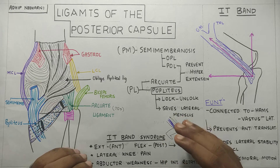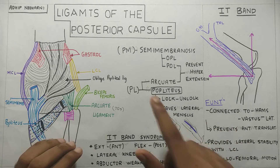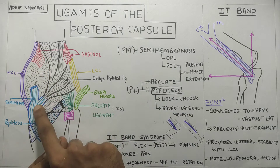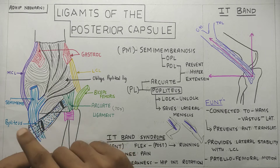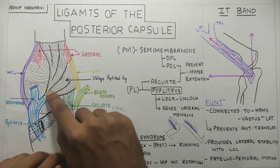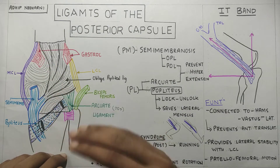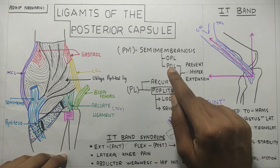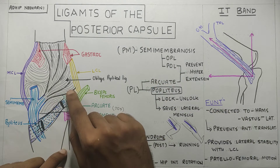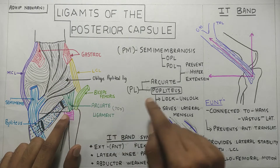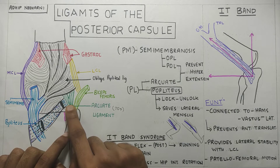In this video we are going to talk about ligaments of the posterior capsule. On the posteromedial side there is the MCL and semimembranosus tendon. The semimembranosus tendon has an extension of the oblique popliteal ligament which covers the capsule. More superficially it has the posterior oblique ligament, which along with the arcuate ligament — the Y-shaped ligament — prevents hyperextension in the knee joint.